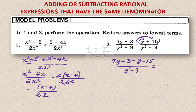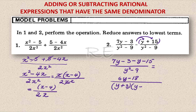Negative 1 times 15. Now we can simplify the numerator: 7y minus y is 6y, and negative 3 plus negative 15 is negative 18. The denominator factors as y plus 3 times y minus 3, since y squared minus 9.